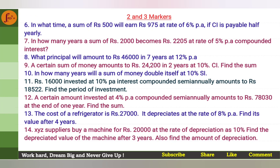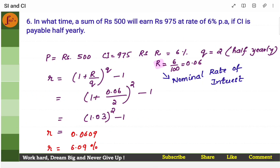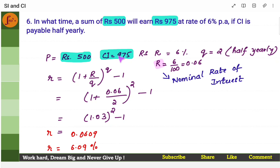Now let's look at two-marker and three-marker problems. In what time does a sum of rupees 500 earn rupees 975? Principal is 500, compound interest is 975 — that is over and above 500 rupees it will earn 975 rupees extra. So compound interest is 975.